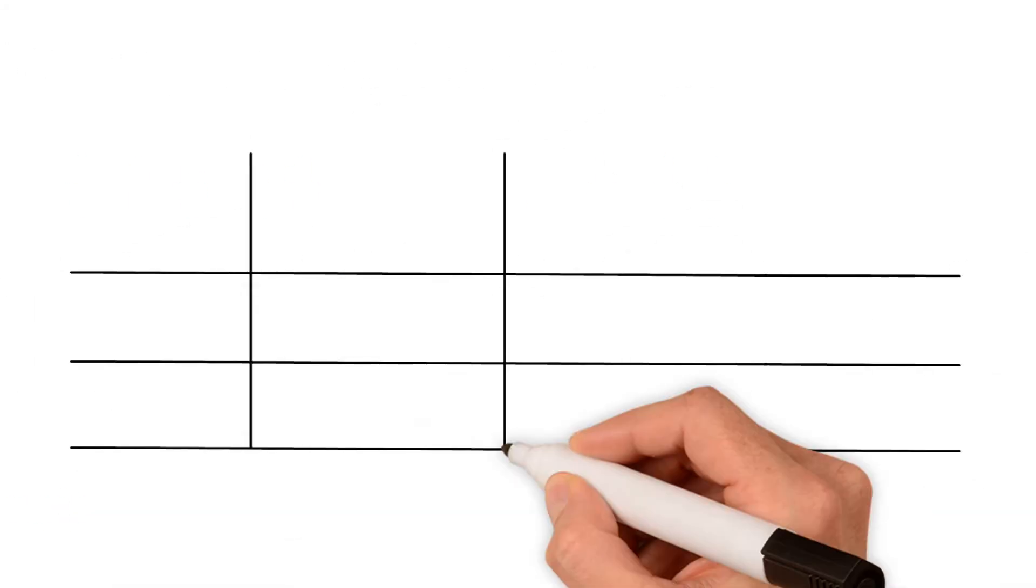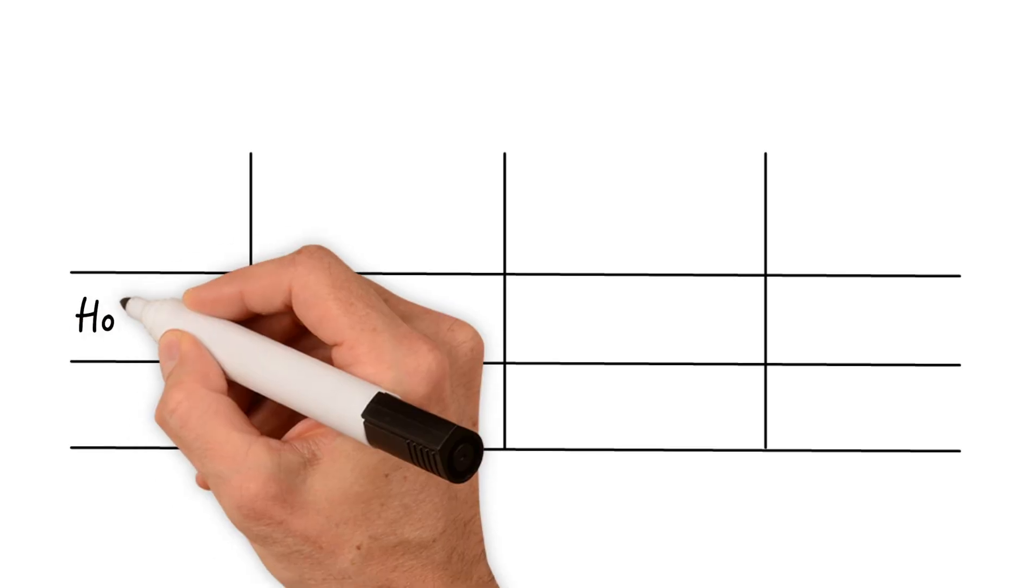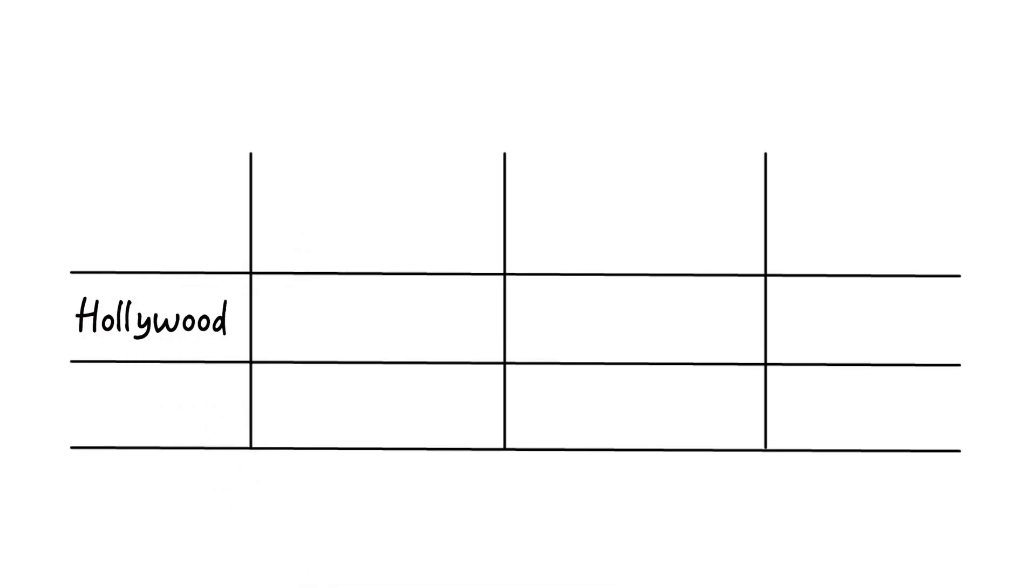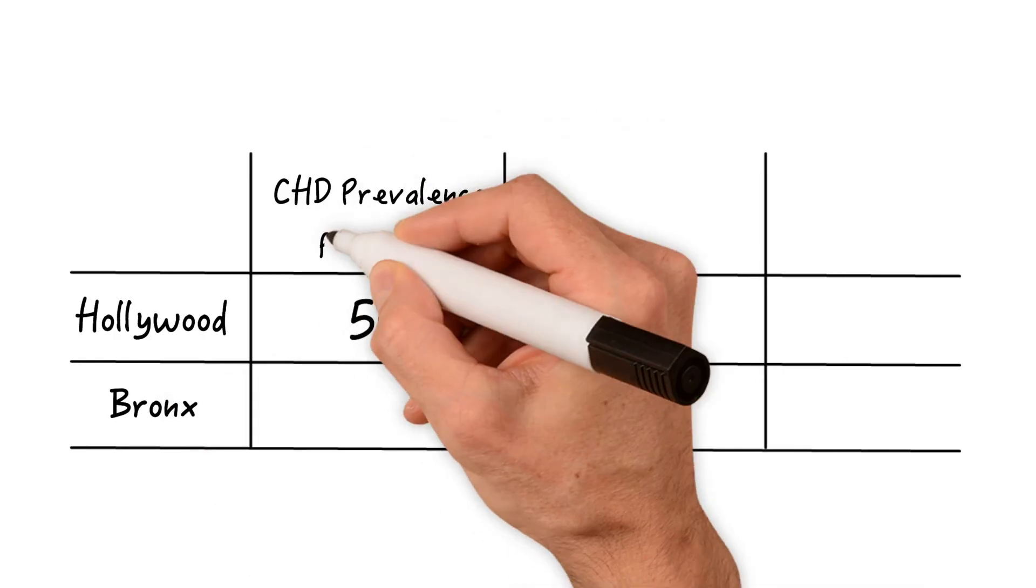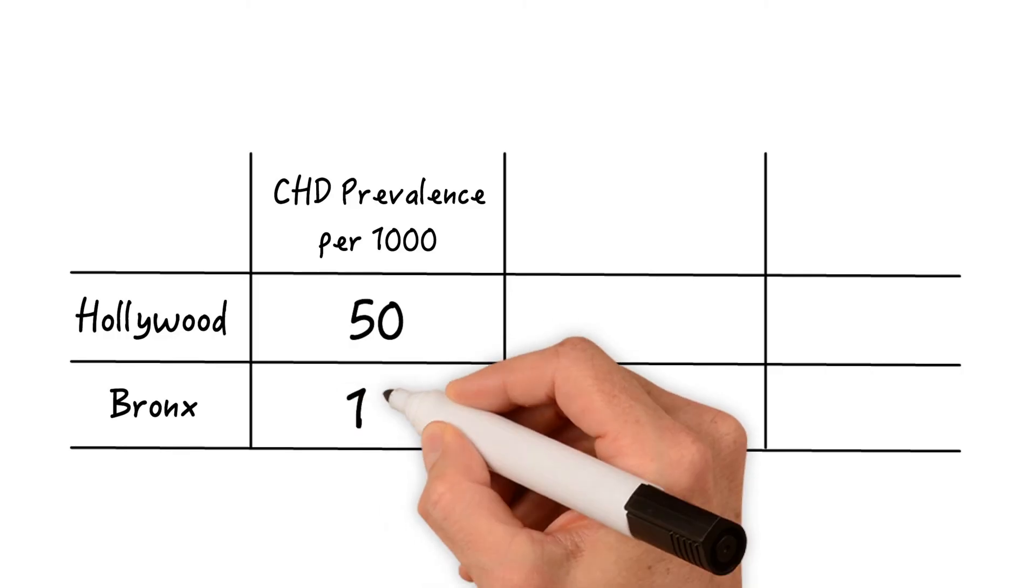Let's use an example of coronary heart disease in two different populations. One is the population of Hollywood. The other one is the population of the Bronx. Our fictitious Hollywood has a prevalence of 50 cases per 1000 population. The Bronx, on the other hand, has a prevalence of 10 per 1000.